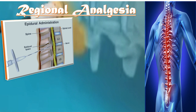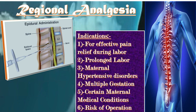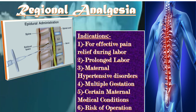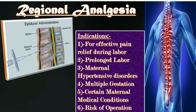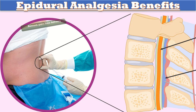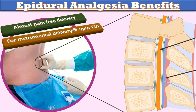The next type of analgesia during labor is regional analgesia, which consists of epidural and spinal analgesia. The indications include effective pain relief during labor, prolonged labor, maternal hypertensive disorders, multiple gestation, maternal medical conditions like cardiovascular problems, and when there is risk of operative delivery requiring regional analgesia such as spinal and epidural.